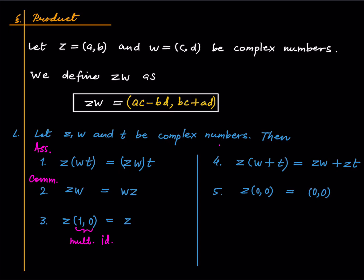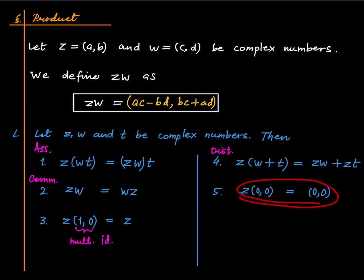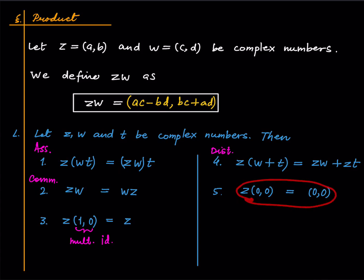This is distributivity: multiplication distributes over addition, so Z times (W plus T) equals ZW plus ZT. When we write this we are using the standard order of operations — multiply first and then add. Just like in real numbers, this distribution happens here too. And multiplying any complex number by zero gives zero, reinforcing the role of the additive identity.